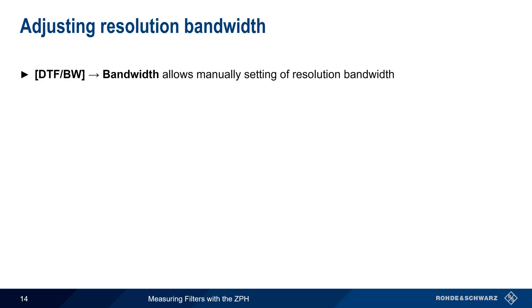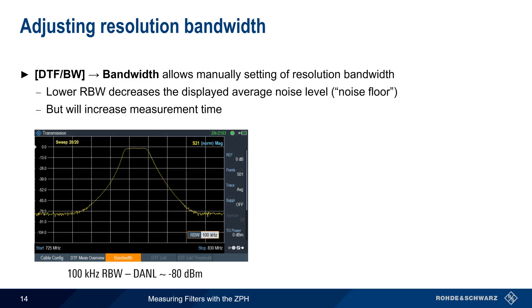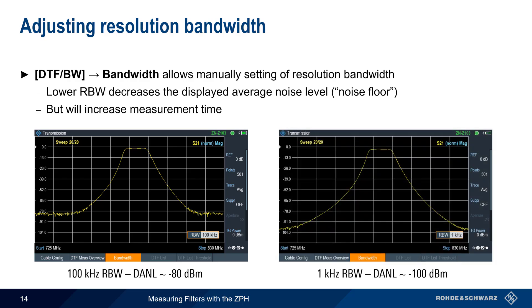Another important setting is Resolution Bandwidth, which can be manually adjusted by pressing the DTF Bandwidth hard key and then Bandwidth. Lowering the Resolution Bandwidth will decrease the Displayed Average Noise Level, or DANL, but will also increase measurement time. For example, measuring with a 100 kHz resolution bandwidth gives a DANL of about minus 80 dBm, but decreasing it to 1 kHz lowers the DANL to about minus 100 dBm. One reason why trace averaging and lowering DANL is helpful is that they allow more precise measurements of the difference between the pass band and stop band attenuation. This is something we'll talk about in more detail in just a few moments.